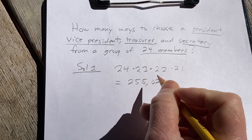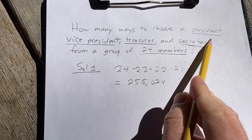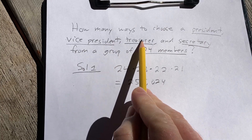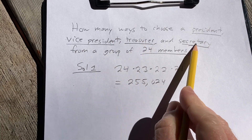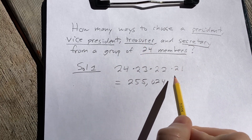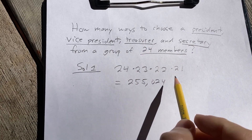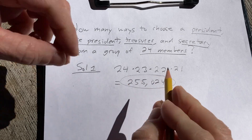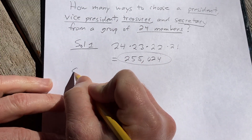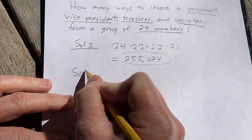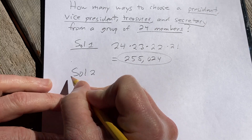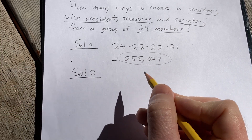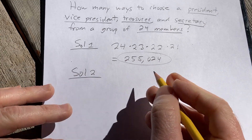That's how many ways there are to choose a president, vice president, treasurer, and secretary from a group of 24 members. Solution two is going to be with a formula. Some people prefer this. Also, if you have a calculator, you can do this in your calculator, which makes it really convenient.